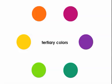Finally, there are tertiary colors, which are created from mixing one primary color and one secondary color. So you can see we have red-orange, red-purple, blue-purple, blue-green, yellow-green, and yellow-orange.